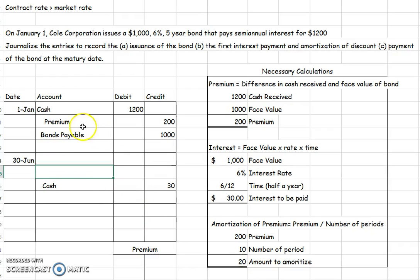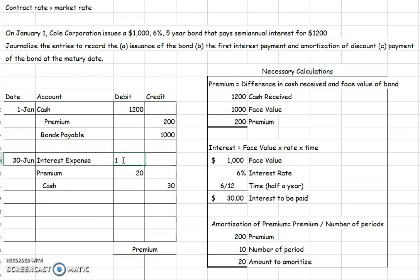A premium has a normal credit balance. If I want to slowly reduce that credit balance, I need to debit it. So I debit the premium for $20. Now I can solve for my interest expense — I need another $10 to balance, because a premium reduces interest expense: 30 minus 20 equals 10. For a discount you add to interest expense; for a premium you subtract. This makes sense because our contract rate was greater than the market rate, and by amortizing the premium we're effectively bringing the contract rate down to the market rate over time.